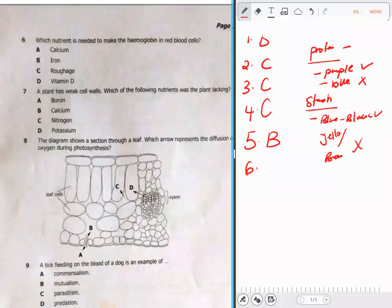Question 6: Which nutrient is needed to make the hemoglobin in red blood cells? Which nutrient is needed to make hemoglobin, a red component that is found in your blood? That one, we need iron, which is B.